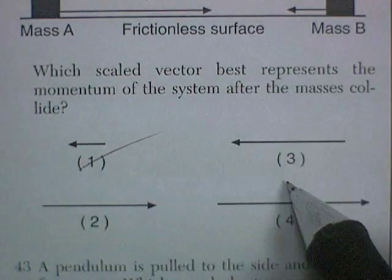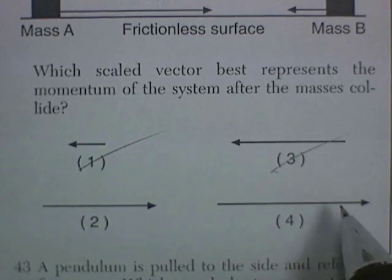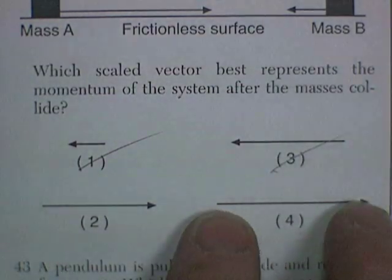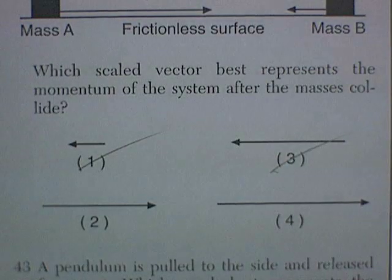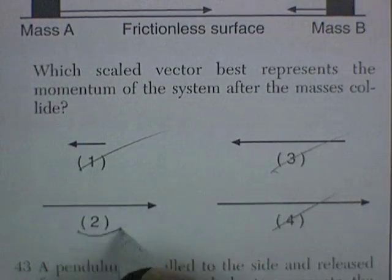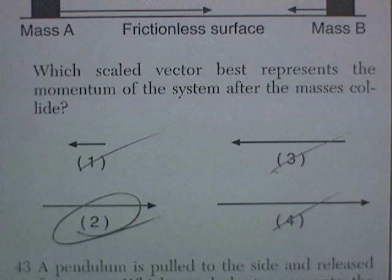Well, it's not 1 or 3. 4 looks to be about the same size as A was. So it's going to be less than that. B is going to have some effect on that. So the resultant answer would be 2.